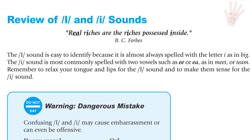Review of I and E sounds. The I sound is easy to identify because it is almost always spelled with the letter I, as in big. The E sound is more commonly spelled with two vowels such as double E or EA, as in meet or team. Remember to relax your tongue and lips for I, and to make them tense for E.